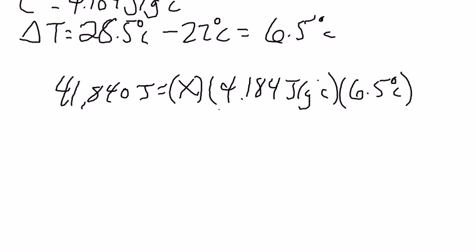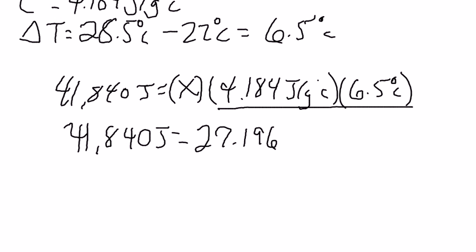Now, on the right side of this equation, we can combine these two items. So 41,840 joules is equal to 4.184 joules per gram degrees Celsius times 6.5 degrees Celsius. When you multiply those numbers together, you will get 27.196. And then notice what we have that's like - degrees Celsius is like here, so we're just left with joules per gram, and then times X.